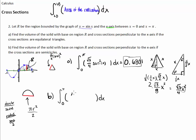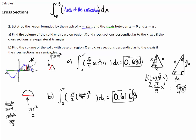Our equation is pi/2 times (sine x divided by 2) squared. Typing that into the calculator, we get 0.6168, so the answer is 0.616 or 0.617. That takes care of problem number 2.